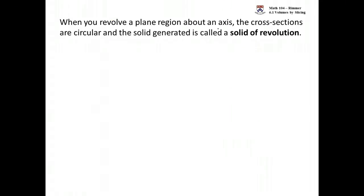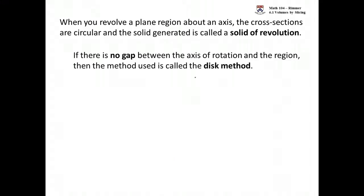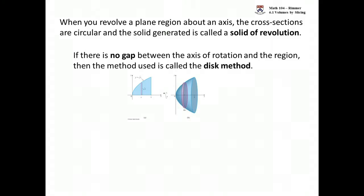When you revolve a plane region about an axis, the cross sections are circular and the solid generated is called a solid of revolution. If there's a gap in this particular drawing, the axis that we're rotating about is denoted here with this arrow.